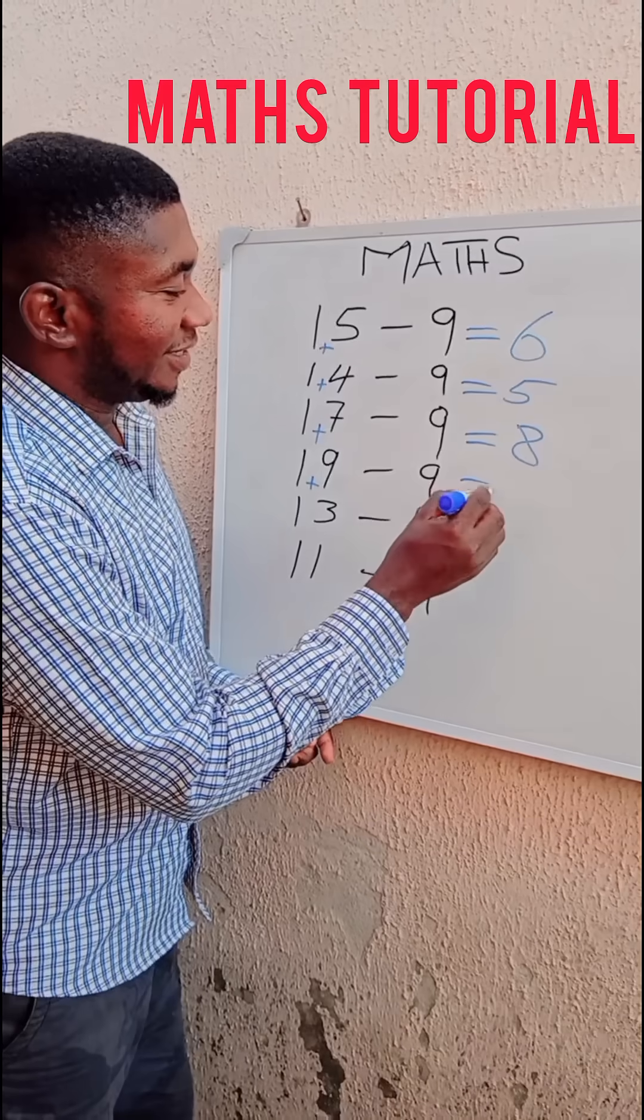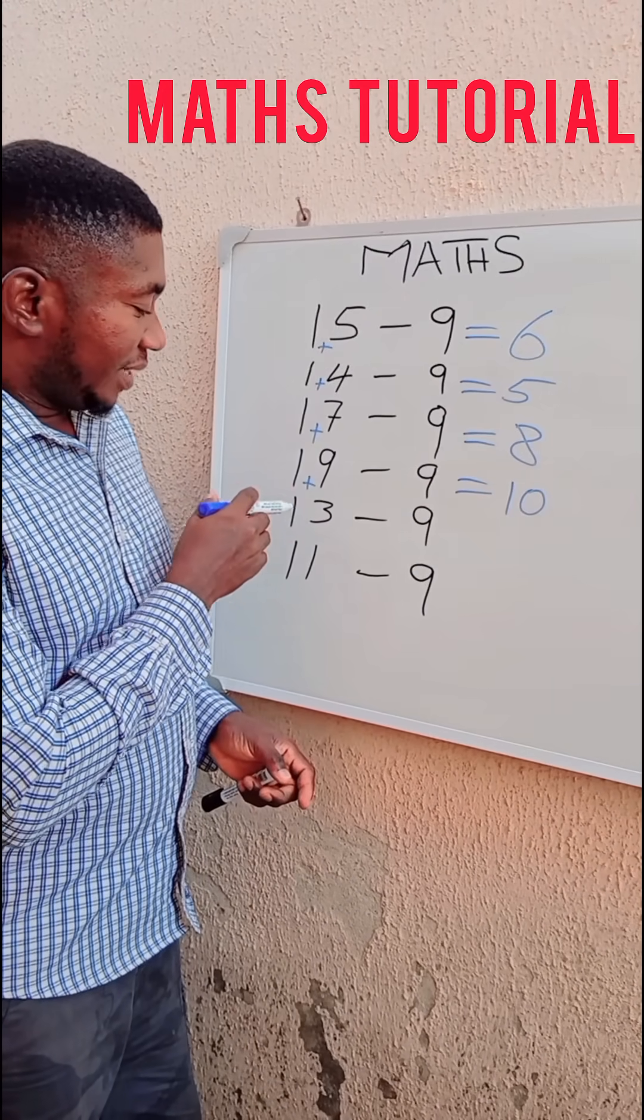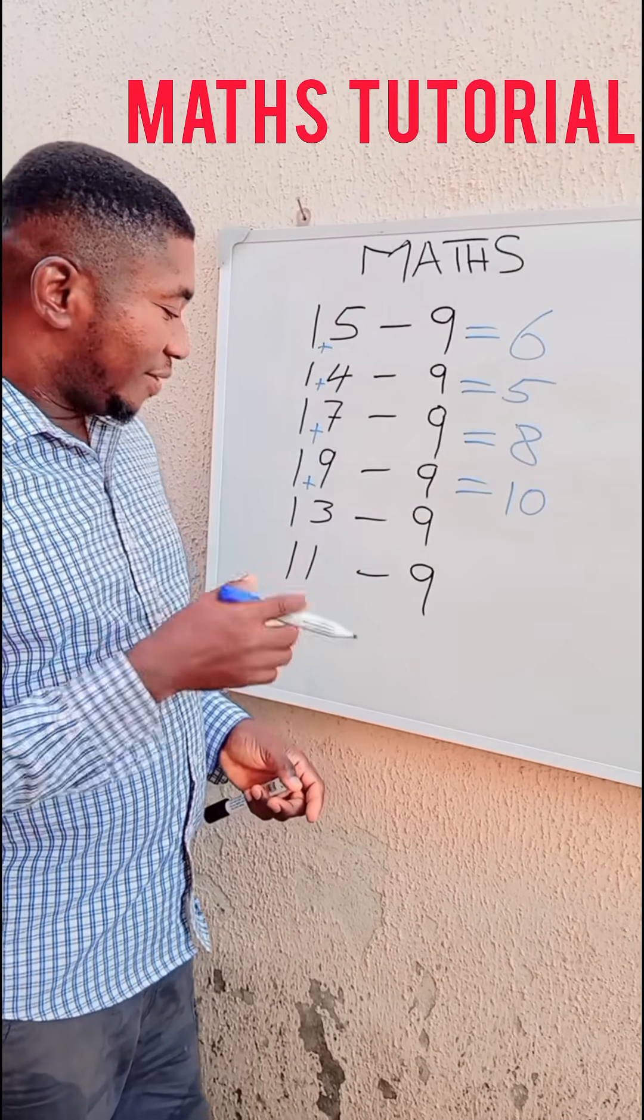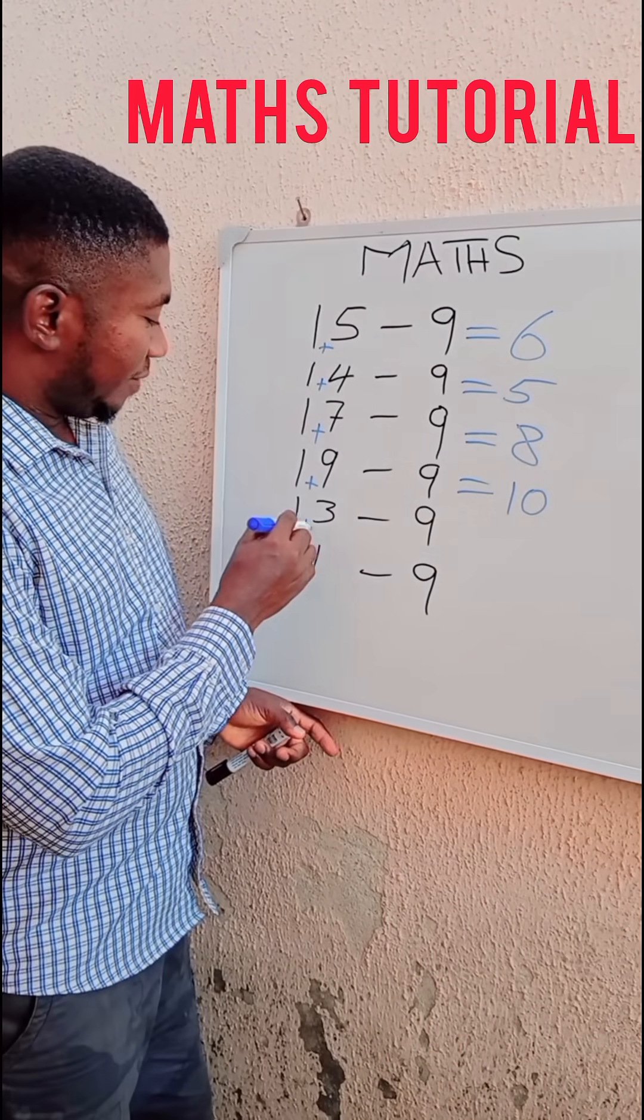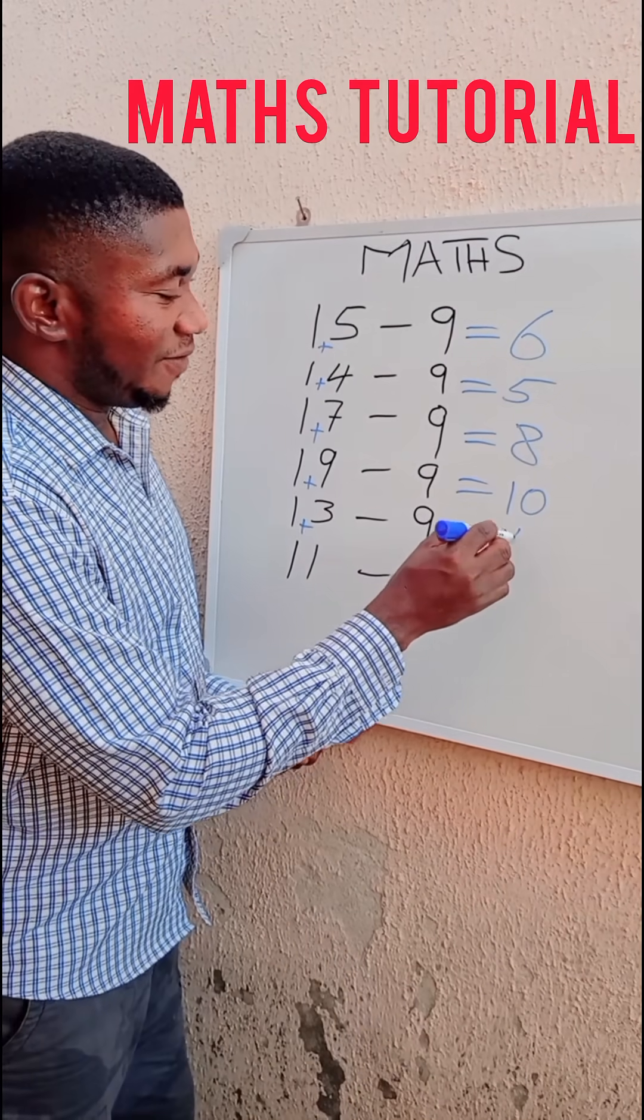Then here we have 13 minus 9. Instead of you to stretch yourself, put a plus sign here. 1 plus 3 is 4. 13 minus 9 is the same thing as 4.